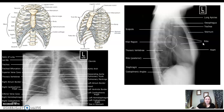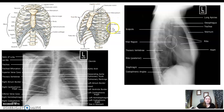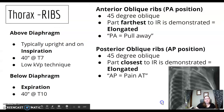Review your anatomy: PA chest, anatomy anterior to posterior for lateral chest. Go through thorax, ribs, sternum, and all those landmarks.